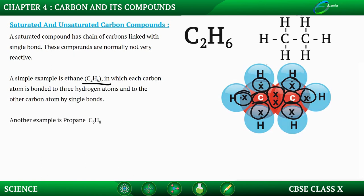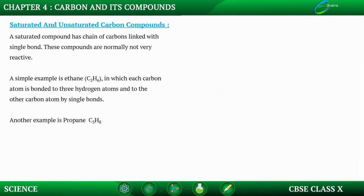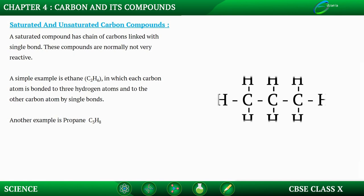Now there is another example called propane. Let us try drawing the propane molecule. Propane has three carbons linked by single bonds, and then it has eight hydrogen atoms. All these gaps are filled by hydrogen atoms — carbon is sharing one electron each with the adjacent carbon atom and one electron with each hydrogen atom. So the molecular formula is C3H8.